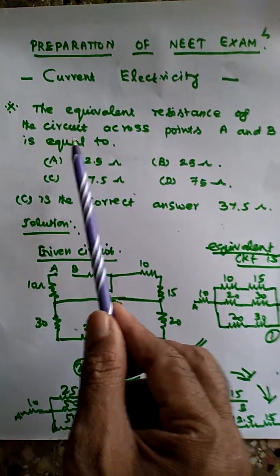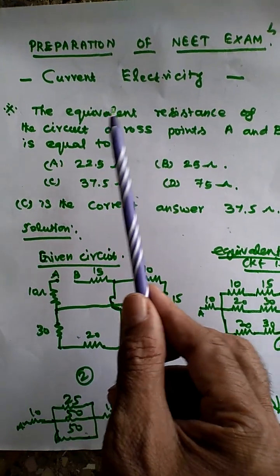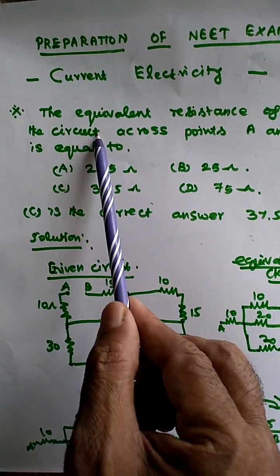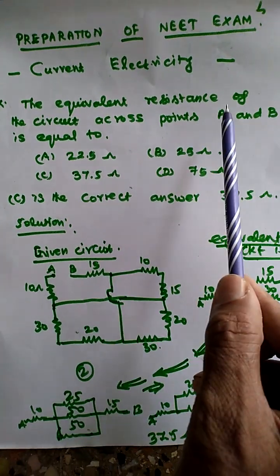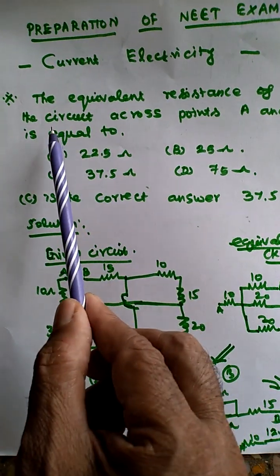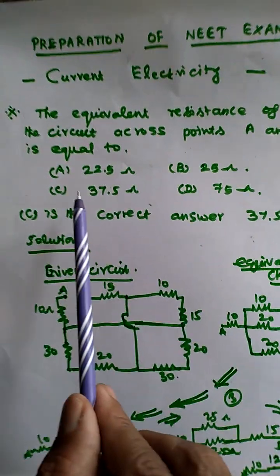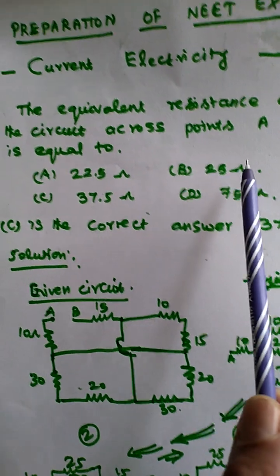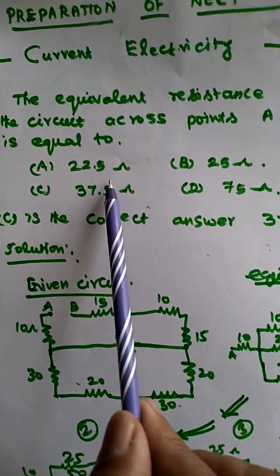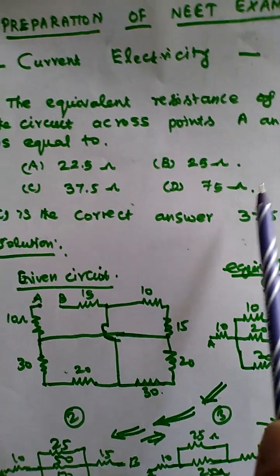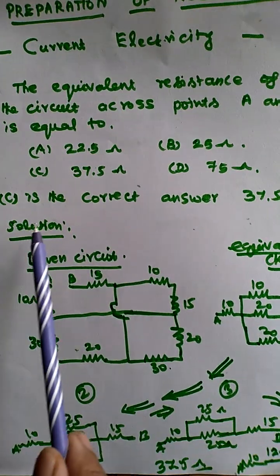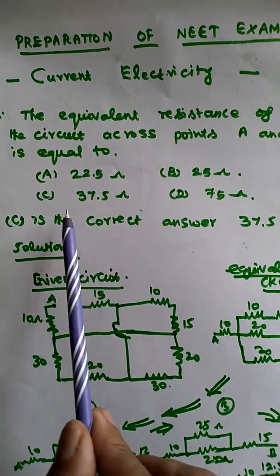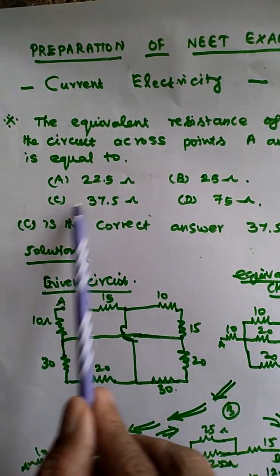The given question: the equivalent resistance of the circuit across points A and B is equal to. The given options are 22.5 ohm, 25 ohm, 37.5 ohm, or 75 ohms. The correct answer is 37.5 ohms — Option C.